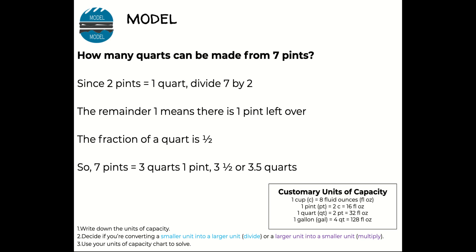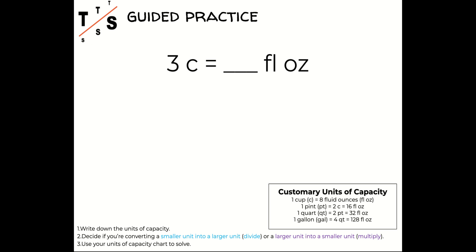All right, let's try some together. If you want to pause and try on your own, you can, or you can go along with me. So we want to convert three cups into fluid ounces. Well, I know one cup is equal to eight fluid ounces based on my chart below, so I can multiply three times eight and I have 24 fluid ounces.